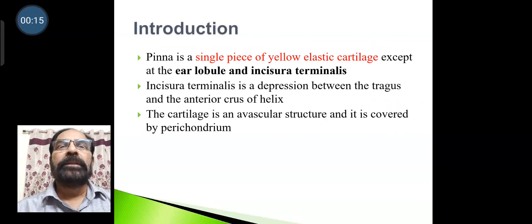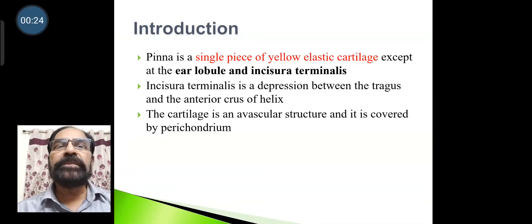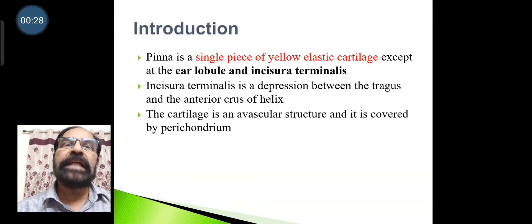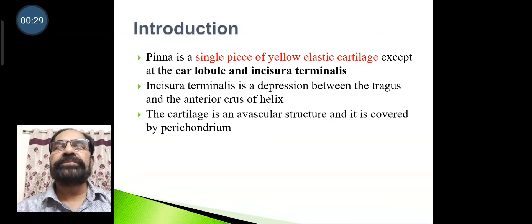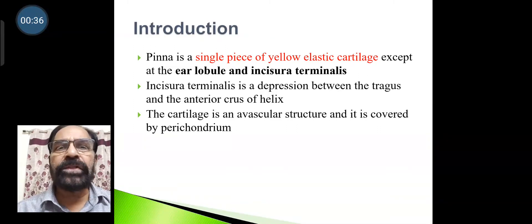We will start with the pinna. Pinna is a single piece of yellow elastic cartilage, except at the earlobe and incisura terminalis. Incisura terminalis is a depression between the tragus and the anterior crus of the helix. The cartilage is an avascular structure and it is covered by perichondrium.